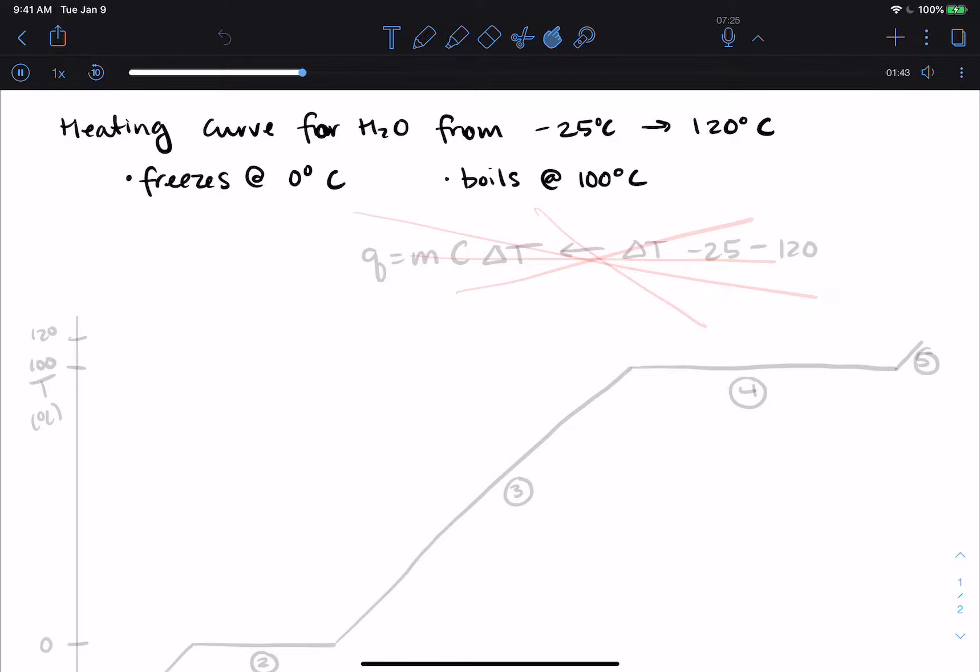So I cannot just Q equals mc delta t and have my delta t go from minus 25 to 120. Do not do this. We don't have liquid water the whole time. We have talked about how the temperature doesn't change when you do a phase change. So this one equation will not work. It cannot work. It will not give you the correct answer.